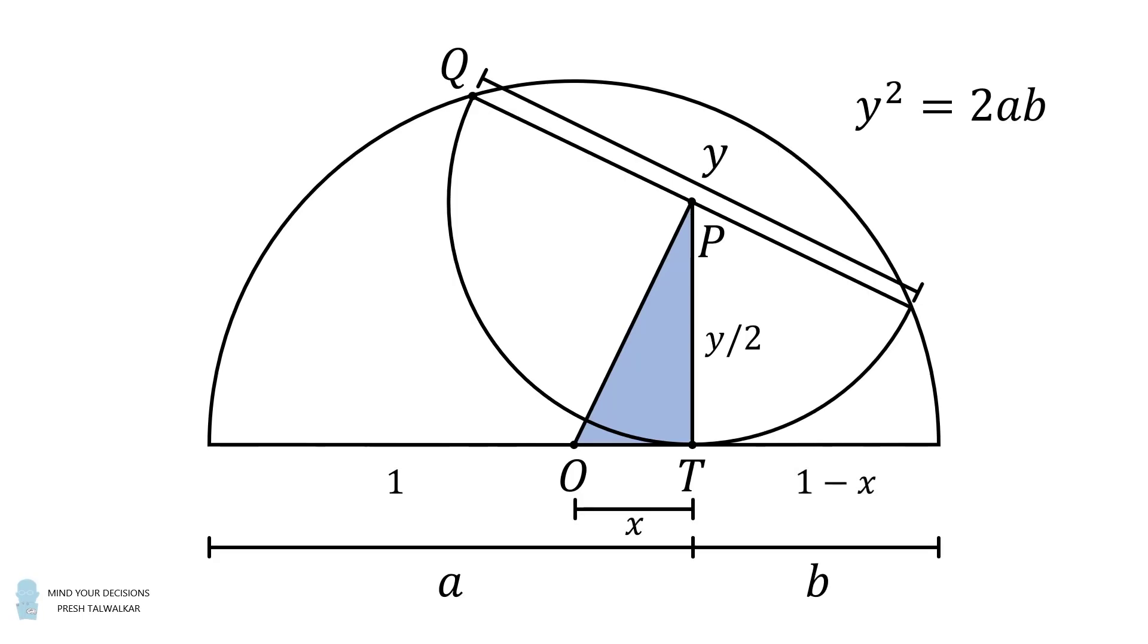Then the remaining distance will be equal to 1 minus x. From our formula that y squared is equal to 2 times a times b, we can see that a here is equal to 1 plus x, and b is equal to 1 minus x.